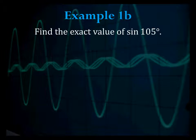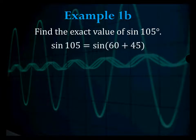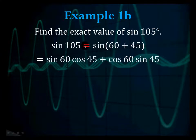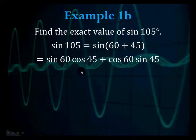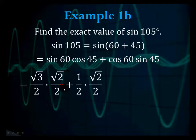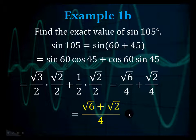Example 1b: find the exact value of sine of 105 degrees. Sine of 105 is sine of 60 plus 45. Using the sine addition formula — sine a cosine b plus cosine a sine b — we get sine 60 cosine 45 plus cosine 60 sine 45. That's (√3/2)(√2/2) plus (1/2)(√2/2), and the answer is (√6 plus √2) over 4.